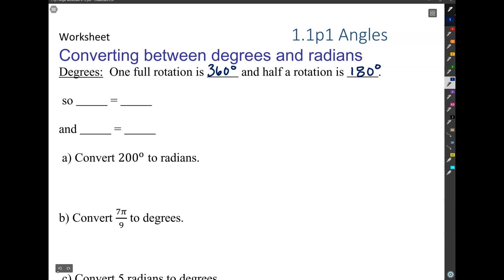And we also know the answer to that in radians. So one full rotation is 2π radians and 180 degrees is π radians.